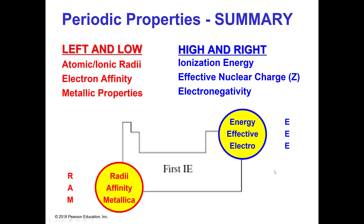To summarize: atomic radius, electron affinity, and metallic character are all left and low — so the lefter and lower an element is, the higher or greater those properties are. Your energies — ionization energy and effective nuclear charge — along with electronegativity are all high and right, so the higher and righter an element is, the more you will see those properties.